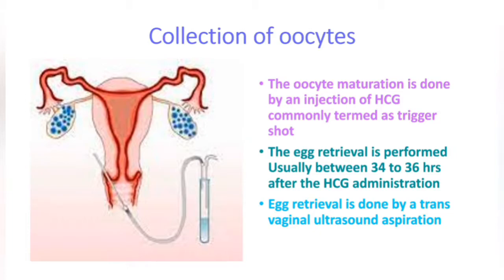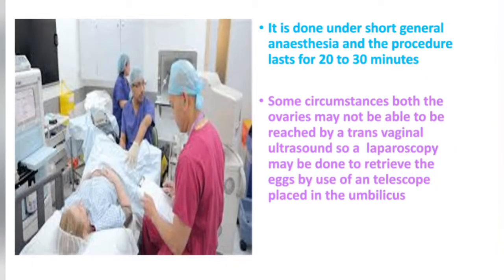Oocyte maturation is triggered by an injection of hCG, commonly termed the trigger shot. Egg retrieval is performed usually between 34 to 36 hours after hCG administration. Egg retrieval is done by transvaginal ultrasound aspiration, performed under short general anesthesia, and the procedure lasts 20 to 30 minutes.